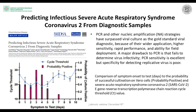If a PCR is positive with a CT above 33 to 35 and the sample was collected after the first 5 to 7 days from onset of disease, the probability of getting a positive result in cell culture is extremely low, if any. To control the pandemic and spread among asymptomatic populations, we should focus on identifying people in the infectious stage and not overly concern ourselves with late low-viral-load positives.